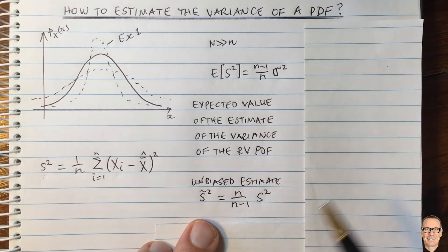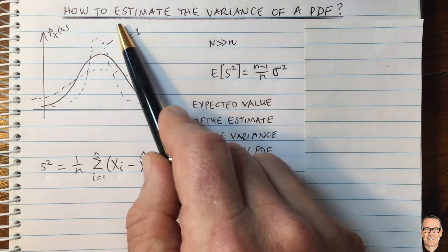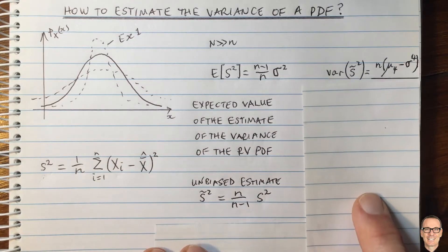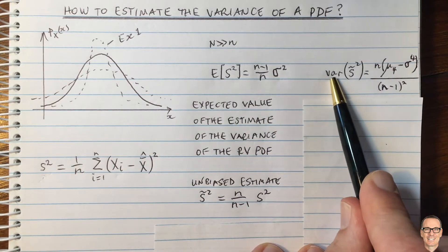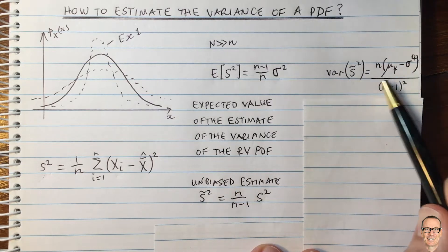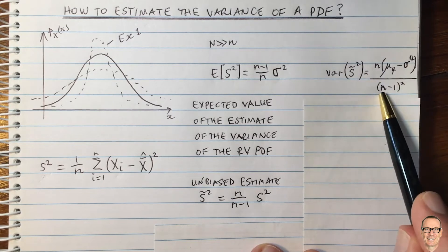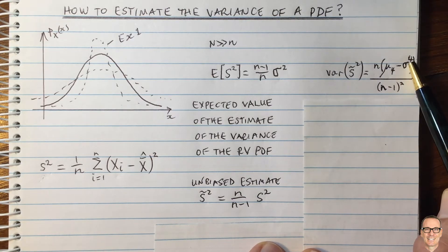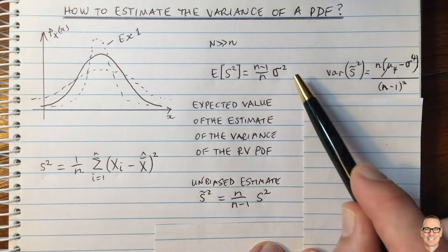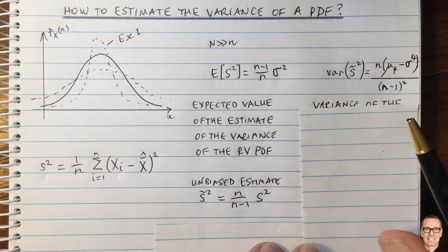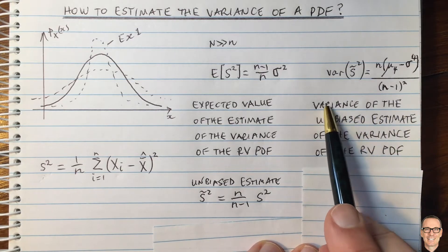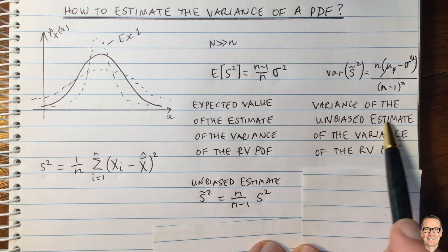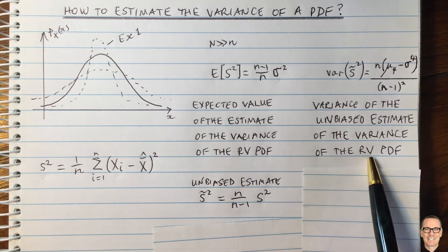The last bit — the one that often confuses people the most — is the variance of this estimate. We have the mean of the estimate, but we can also have the variance of the estimate. There's a formula for the variance of the unbiased estimate, given by this formula here, where n is the number of samples and mu four is the fourth central moment of the random variable, and sigma to the power four is the square of the variance. Written out in longhand: this is the variance of the unbiased estimate of the variance of the random variable PDF.